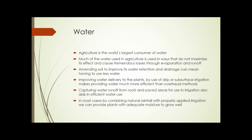Amending soil to improve its water retention and drainage can mean having to use less water. Improving water delivery to plants through drip or subsurface irrigation makes providing water much more efficient than overhead methods. Capturing water runoff from roofs and paved areas for use in irrigation also aids in efficient water use. In most cases, by combining natural rainfall with properly applied irrigation, we can provide plants with adequate moisture to grow well.